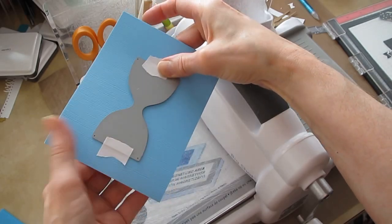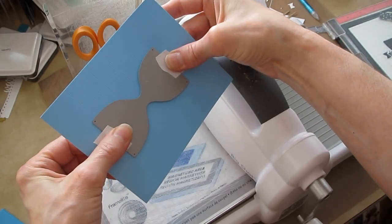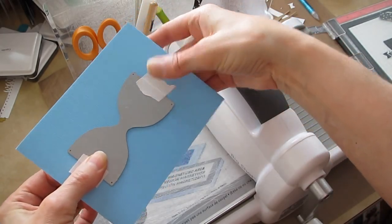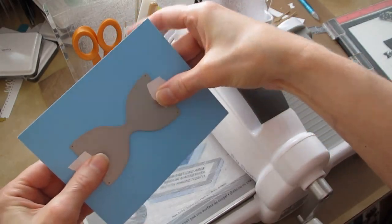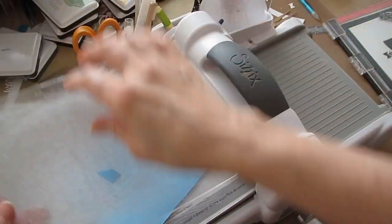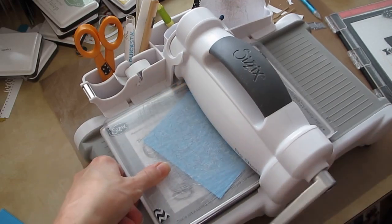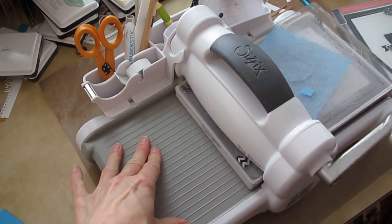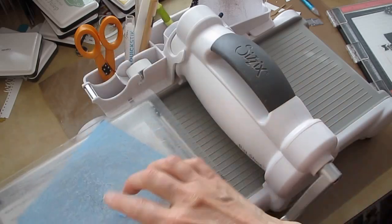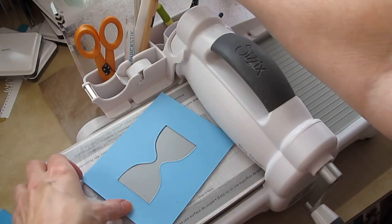Here I have taped the hourglass die to a piece of 4¼ by 5½ inch cardstock. I'm going to die cut it, blades up at a little bit of an angle, just so it goes through the rollers easily. So, there we have it cut.